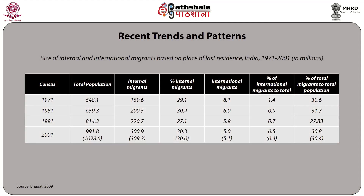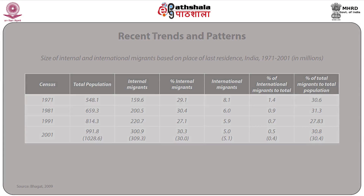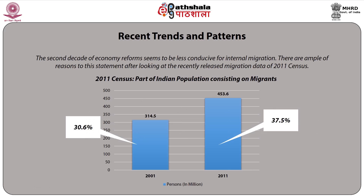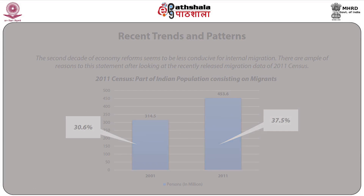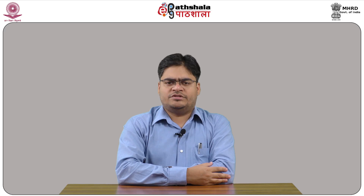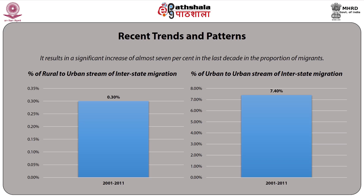Except for the urban-to-rural stream, other streams, especially rural-to-urban, maintained a rhythm of growth in this decade. The second decade of economic reforms seems less conducive for internal migration, as indicated by the 2011 census data. About 453.6 million persons, that is 37.5 percent of the Indian population, are migrants settled in a place different from their previous residence. In 2001 the figure stood at 314.5 million, which is 30.6 percent, resulting in a significant increase of almost 7 percent in the proportion of migrants in the last decade.